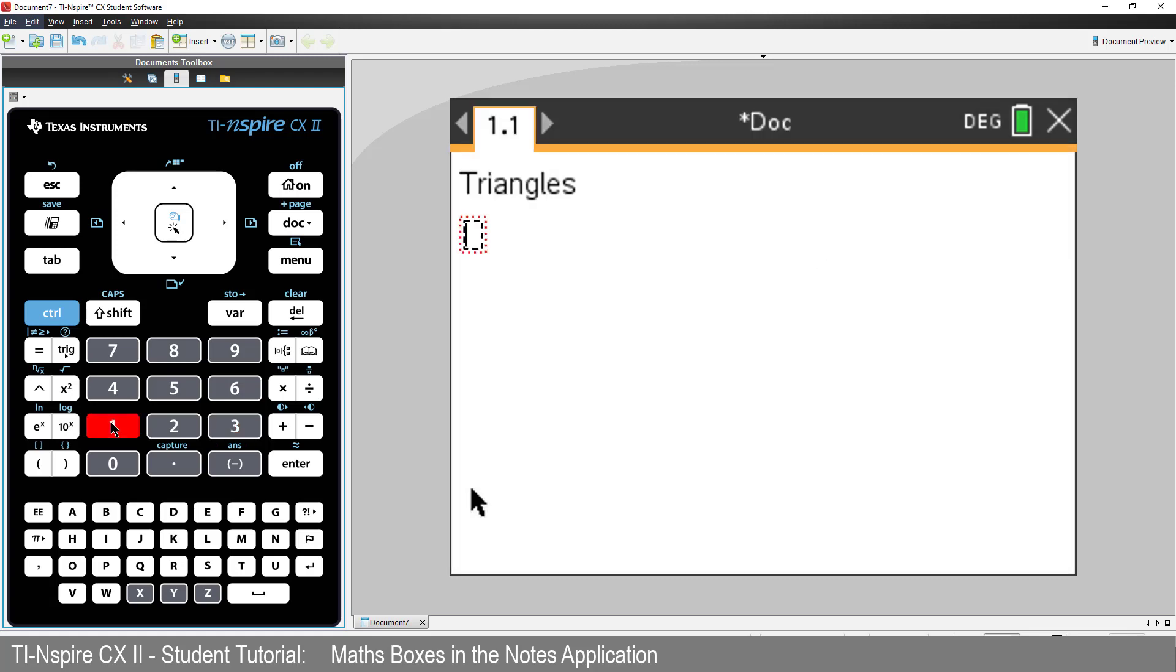In the maths box, I'll assign A equal to 10. Then press enter. The variable A is now equal to 10.